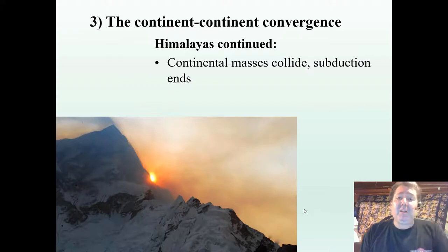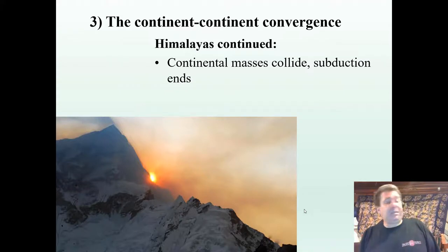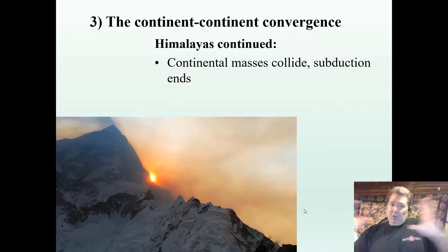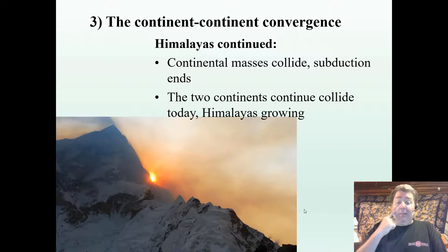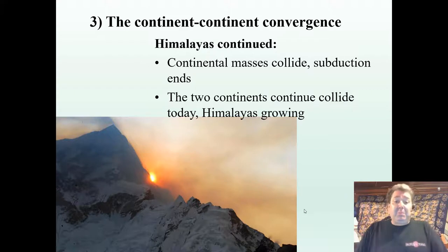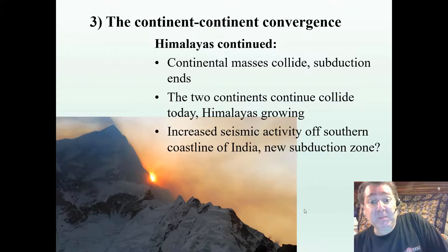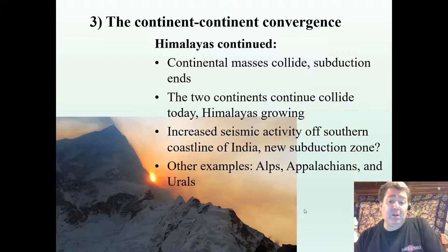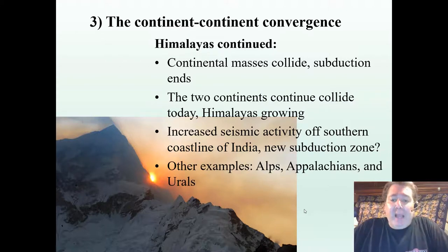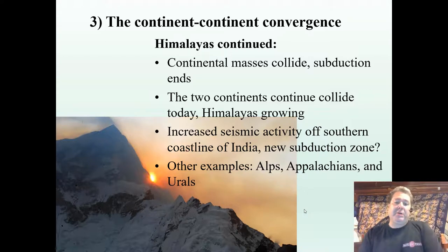A little more about the Himalayas: once those continental masses collide, subduction shuts off and we have a pure continent-continent crumpling collision. The two continents are actually still colliding — the Himalayas are still growing, a couple of centimeters a year. If you climb to the top of Mount Everest today, you would be the highest person ever in the world. There has also been noticed some increased seismic activity off the southern coastline of India — could this be a new subduction zone? Check back in a couple of million years. Other examples of continent-continent collisions include the Alps, the Appalachians, and the Urals. All right folks, we'll see you next time.